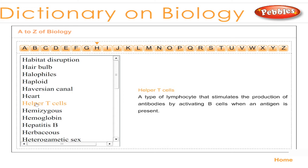Helper T-cells: a type of lymphocyte that stimulates the production of antibodies by activating B-cells when an antigen is present.